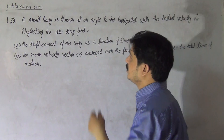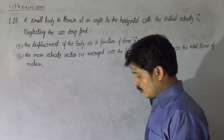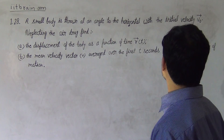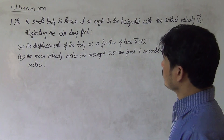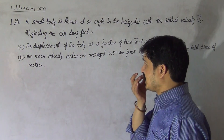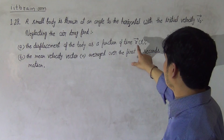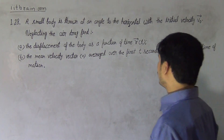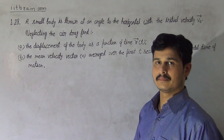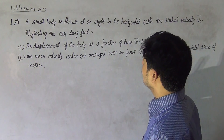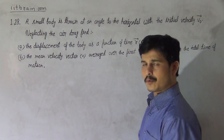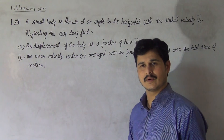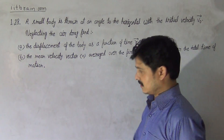Hello students, this is problem 1.28. A small body is thrown at an angle to the horizontal with the initial velocity vector v₀. Neglecting the air drag, find the displacement of the body as a function of time r(t), and the mean velocity vector averaged over the first t seconds and over the total time of motion.